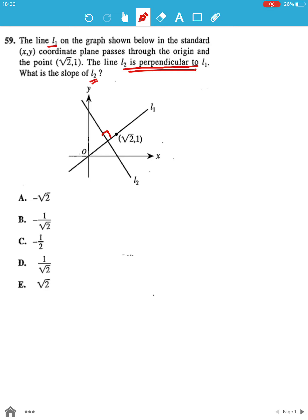For that, first we need to find out the slope of line L1, which is equal to y2 minus y1 over x2 minus x1. Now we have two points out here for line L1, which is since it passes through the origin and root 2, 1.